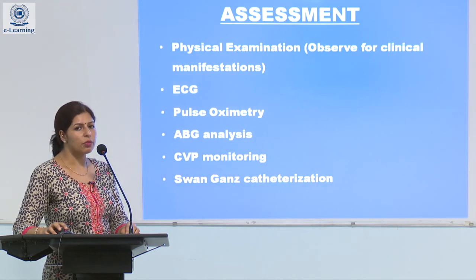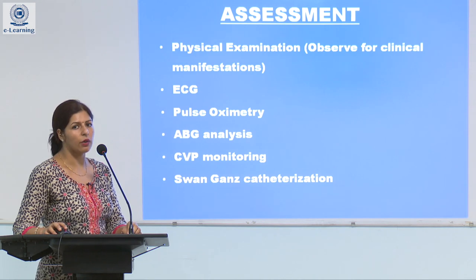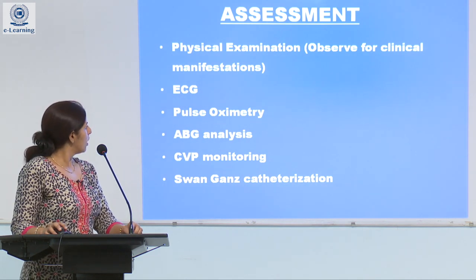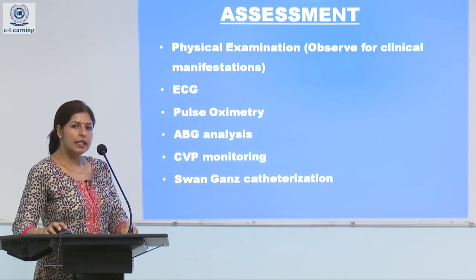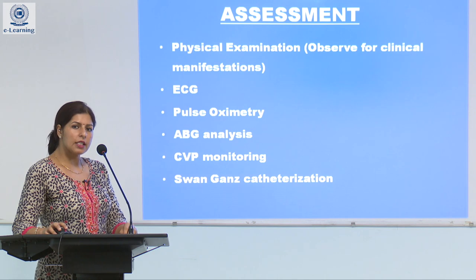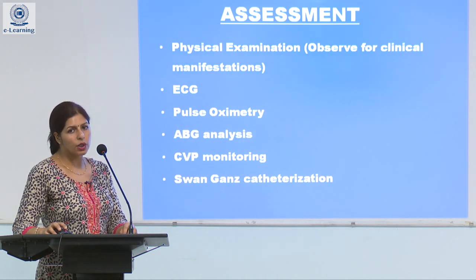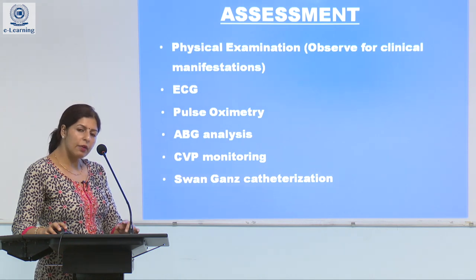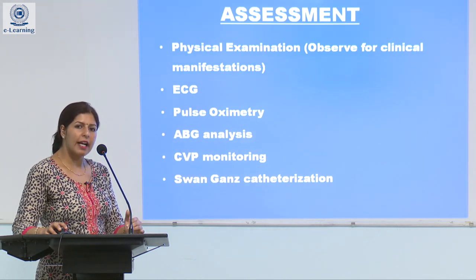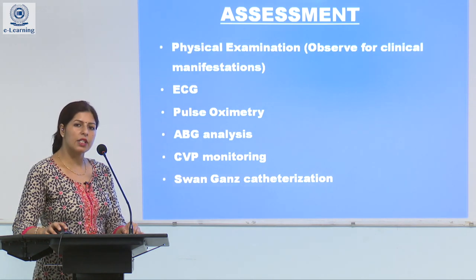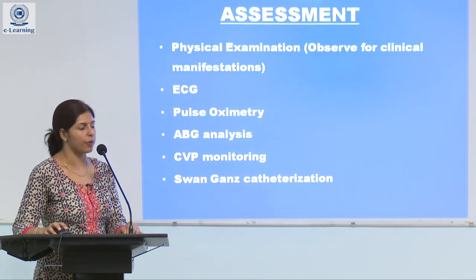Once we have observed the client for subjective and objective findings, we need to carry out evaluation to rule out what kind of shock it is. Physical examination is done, then an ECG, pulse oximetry, and ABG analysis — particularly metabolic acidosis will be present on ABG analysis. CVP monitoring is important, as flat neck veins indicate low central venous pressure. Swan-Ganz catheterization is important for pulmonary artery pressure monitoring.